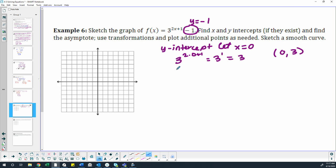Then let's find the x-intercepts. I'm just going to label this with the asymptote. So the x-intercepts, there could be more than one, or there might just be one. Let's go ahead and figure that out. We're going to set our equation 3 to the 2x plus 1 minus 1, set that equal to 0.